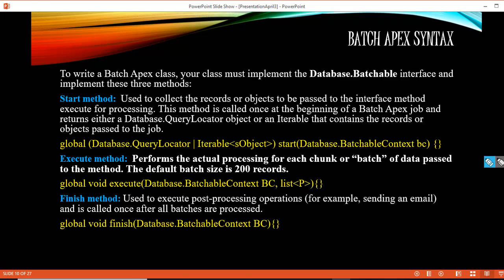The next interview question is: what are the different methods available in Batch Apex? If you want to write a Batch Apex class and process records in batches, you have to implement the interface called Database.Batchable. Once you implement this interface, you have three methods to implement: the start method, the execute method, and the finish method.